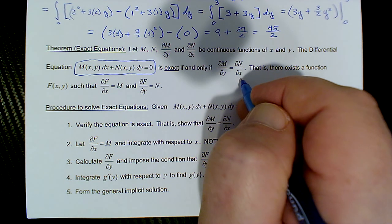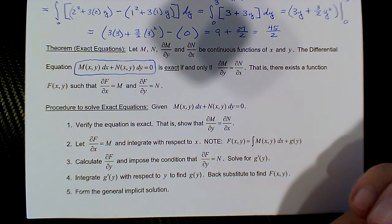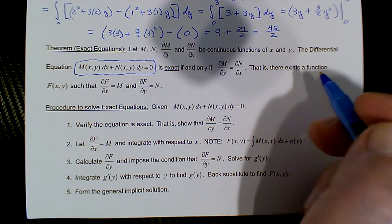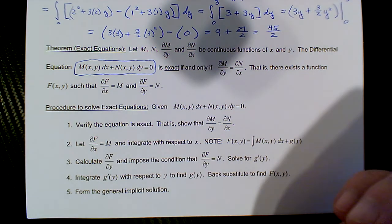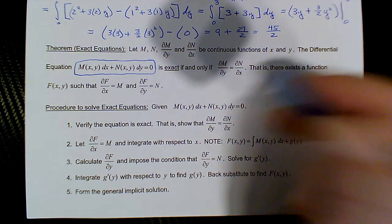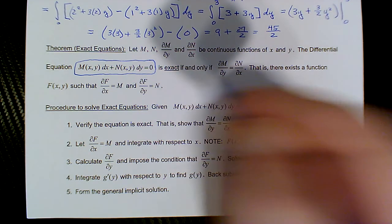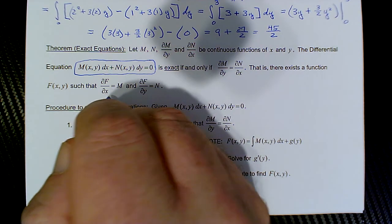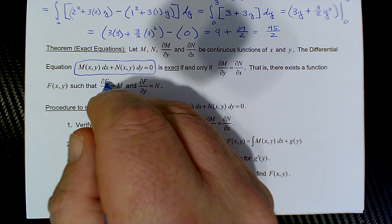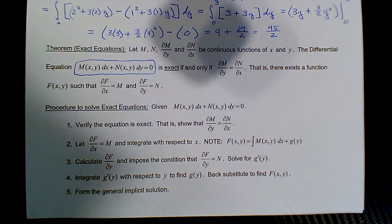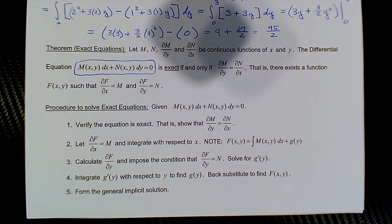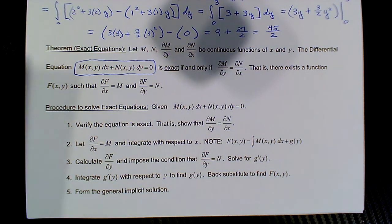This means that there is a function f(x, y) such that — and this basically comes from the definition of differentials — the partial of the function we're looking for with respect to x has to equal M, and the partial of the function that we're looking for with respect to y has to equal N.